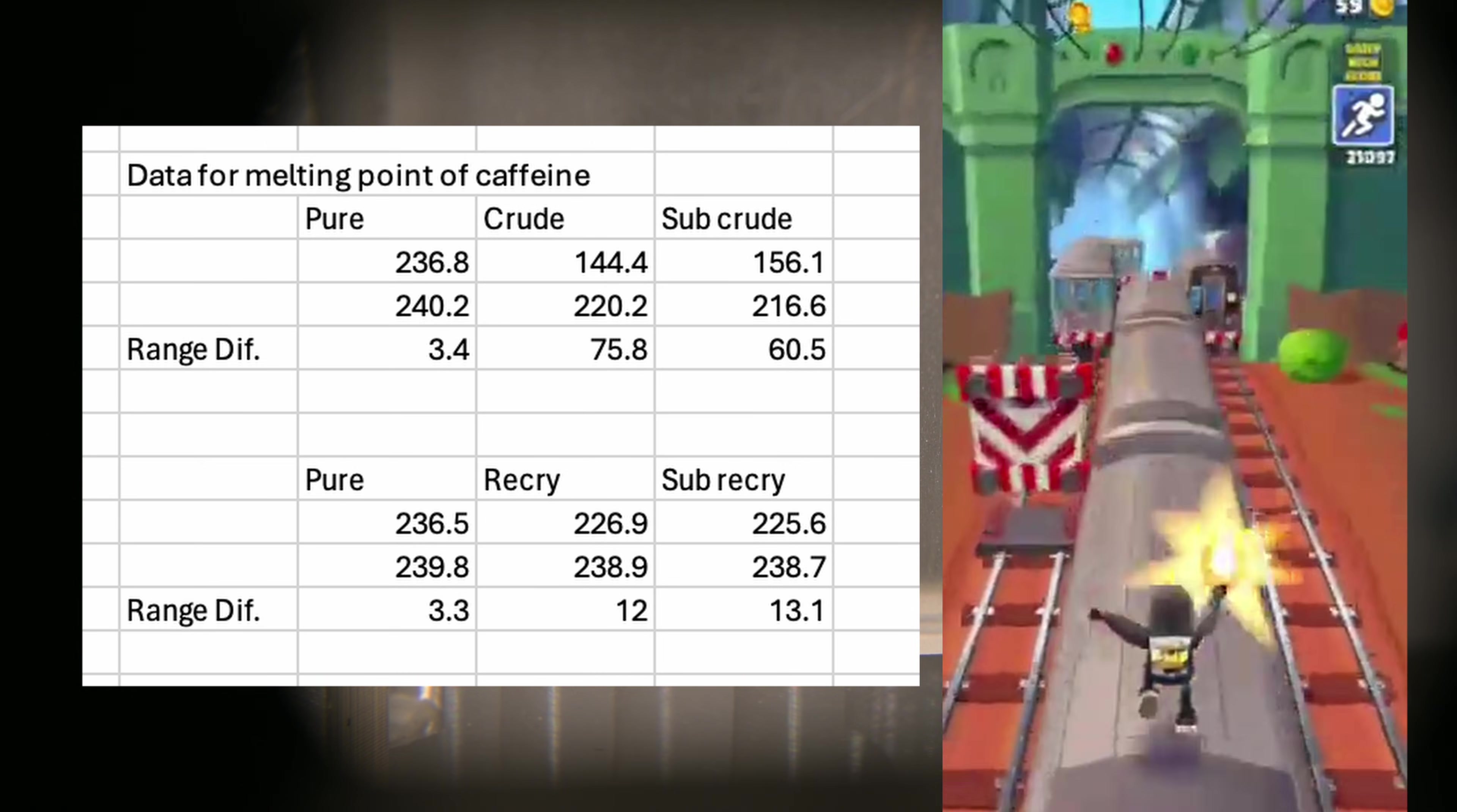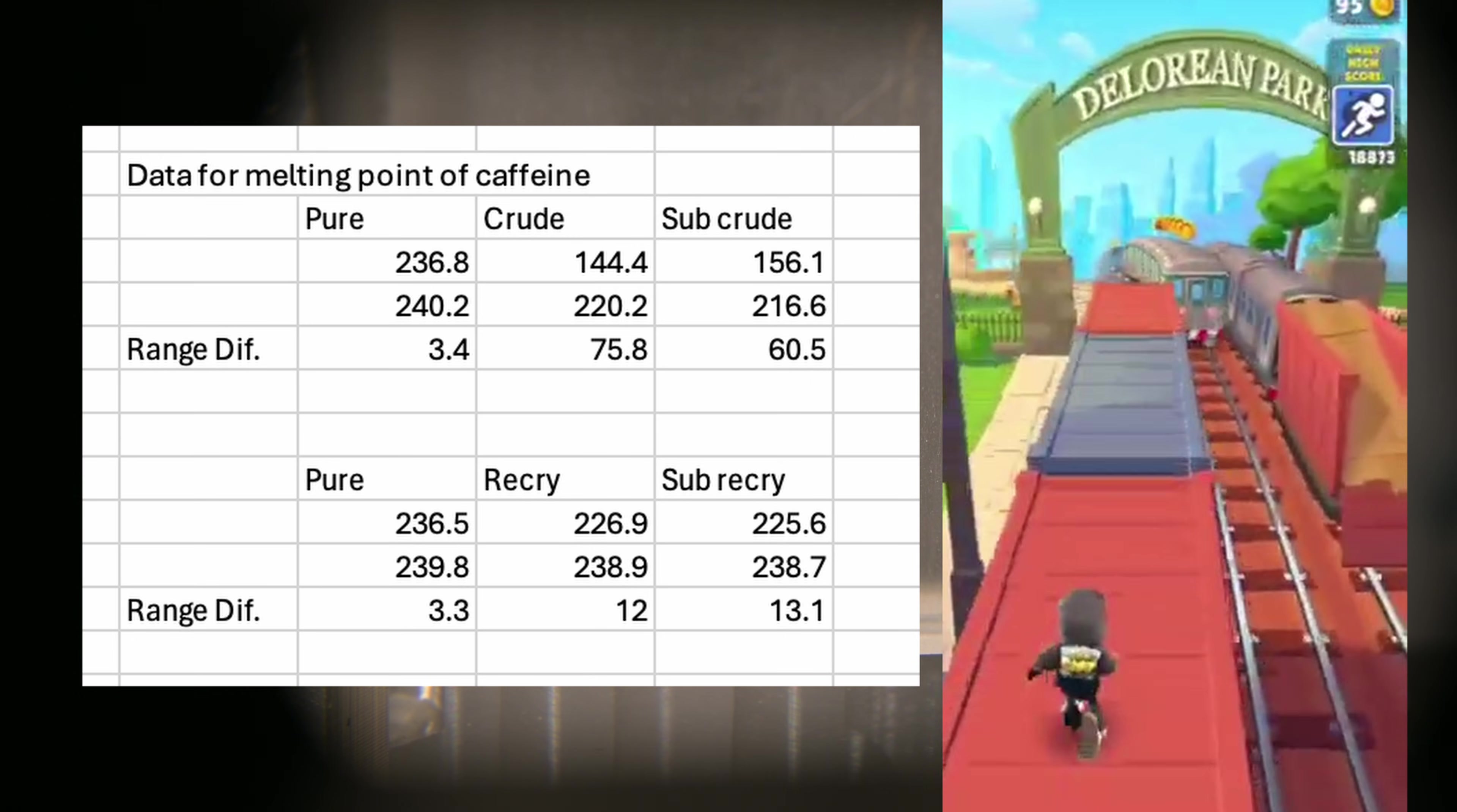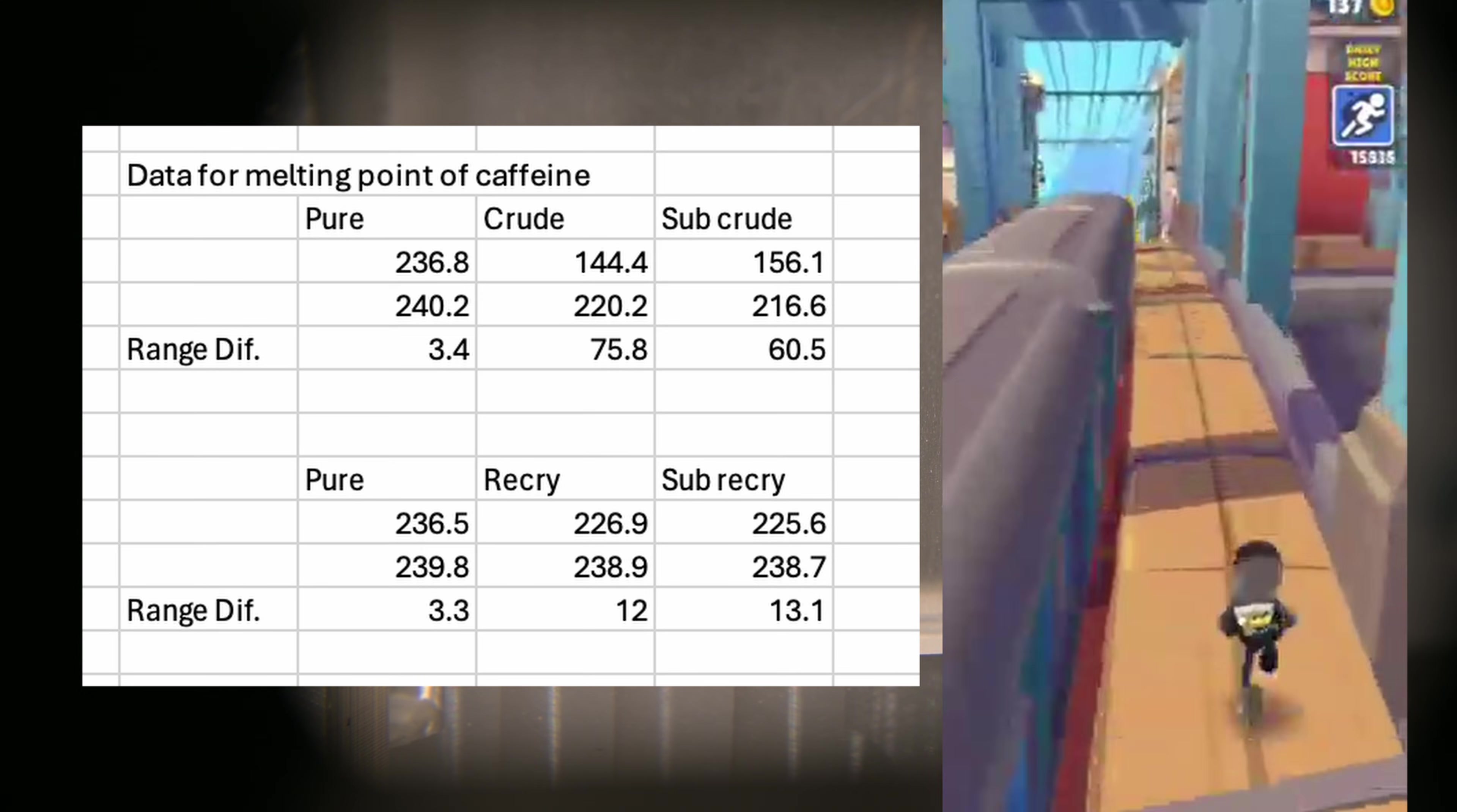Now let's look at our samples of crude. We see an extensive range starting at 144.4 degrees celsius and ending at 220.2 degrees celsius. This has a range of 75.8 degrees celsius, showing a large amount of impurities. Comparing that to the sublimated crude, which has a melting point range of 156.1 to 216.6 celsius, with a given range of 60.5 celsius. This range is smaller than the crude, but by no means pure.